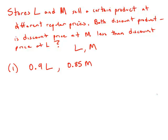So there we have the discounted prices, but we don't know anything about the relationship of L or M. We have no way of knowing whether L is bigger, whether M is bigger and by how much. So this statement by itself is insufficient.